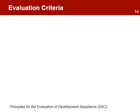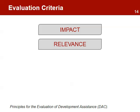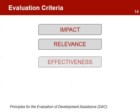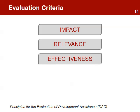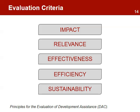When evaluating progress and a project, it is suggested to consider the following criteria: Impact — how and to which degree does the project contribute to the solution of the problem? Relevance — does the initiative make sense in terms of the condition, needs, or problems to which it is intended to respond? Effectiveness — what progress is being made toward the achievement of results? Efficiency — have resources been used in the best possible way? And sustainability — will the results and benefits continue after the project has ended? These are the principles for evaluation of development assistance.